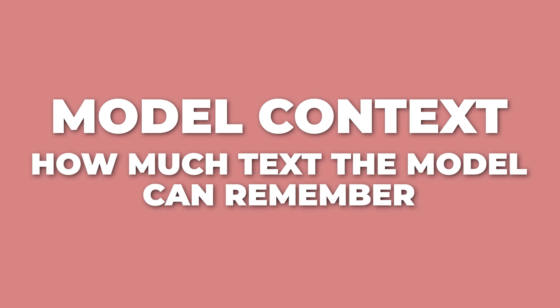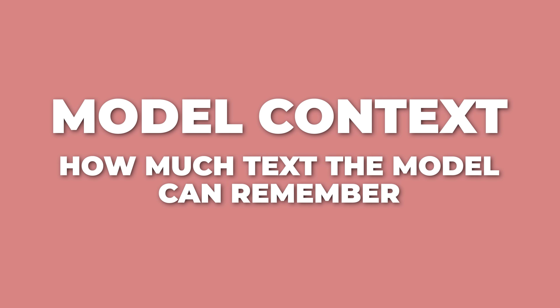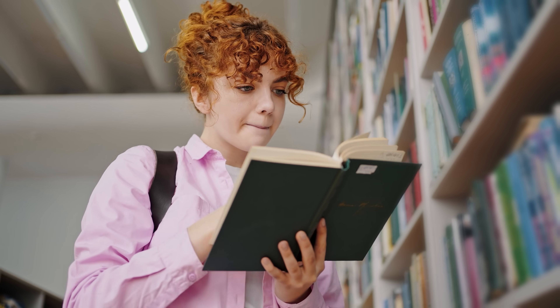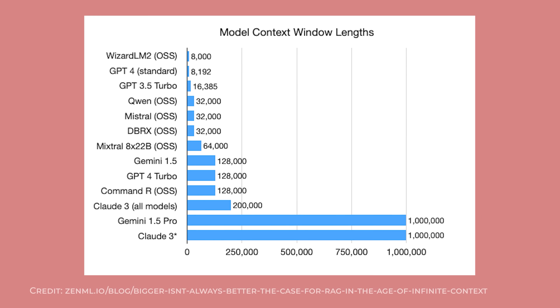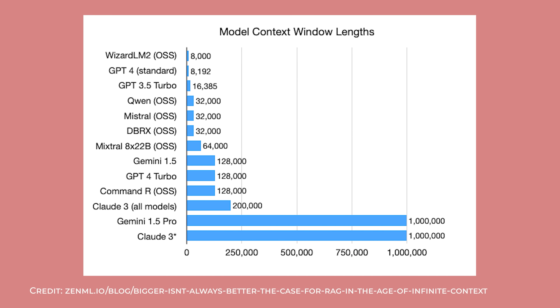Speaking of memory, model context is basically how much text the model can remember and work with at once. Think of it like your working memory when reading a book — you can keep track of the current chapter and maybe the last few chapters, but not the entire book series at once. Context includes your conversation history, the prompt, any documents you've shared, and the response being generated. Models have context limits. When you hit that limit, the model starts forgetting the oldest parts to make room for new information. This is why very long conversations sometimes lose track of things you said at the beginning.